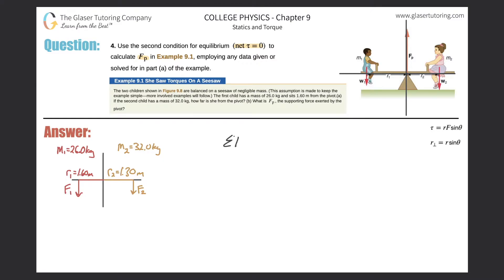So the sum of the torques in this problem will be equal to zero, because it's in static equilibrium. So let's expand on the torques. How many torques are there? Well, there's two, right?